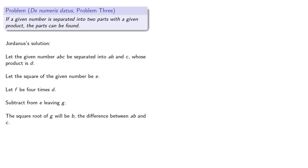Again, Jordanus's purely verbal algebra can be a little hard for modern readers to follow. So in modern notation, we have the given number ABC separated into two parts, AB and C. What Jordanus is calling AB is one of our unknowns, we'll call that X, and C is the other unknown, we'll call that Y.